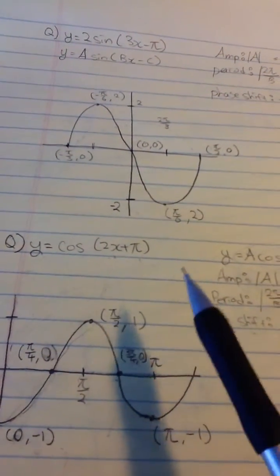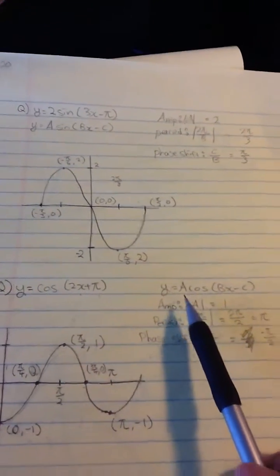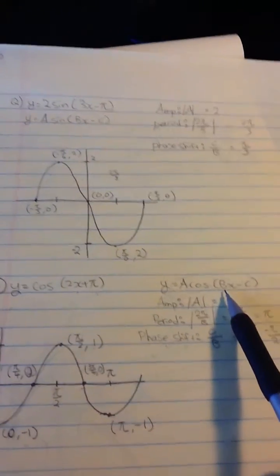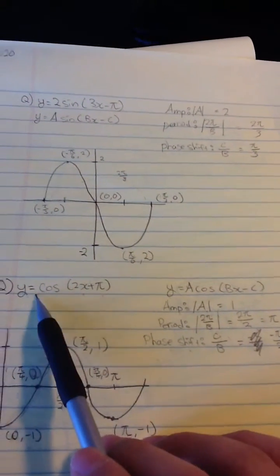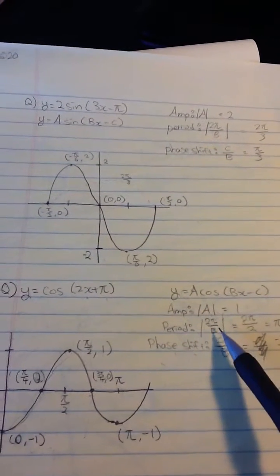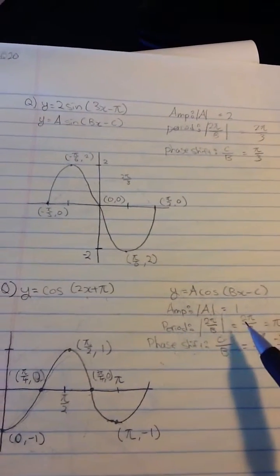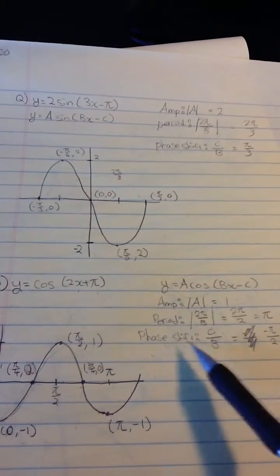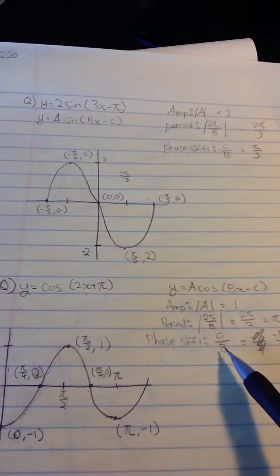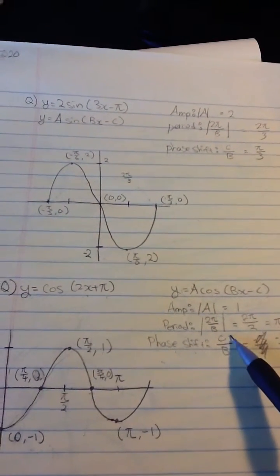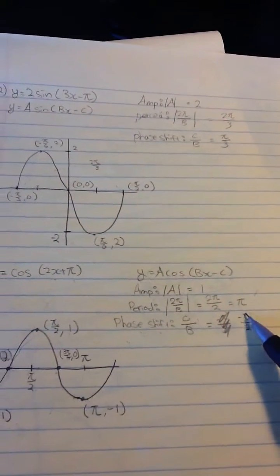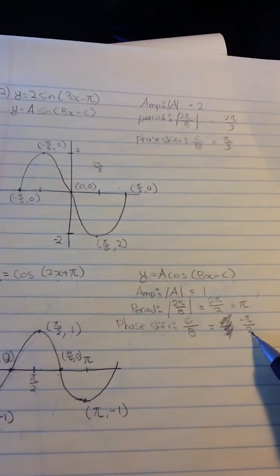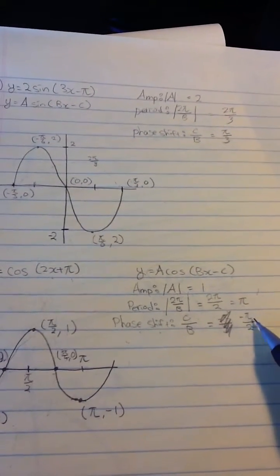First, I'm going to get our amplitude, period, and phase shift. The regular form of cosine is cos(bx - c). The amplitude, which is a, we have 1. For the period, 2π over b, we have b as 2, so 2π over 2, and the period is π. The phase shift is c over b. Since we have plus π, we change it to negative π as c, and b is 2, so the phase shift is negative π over 2.